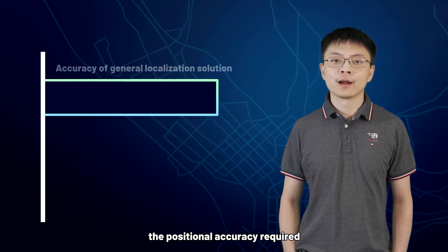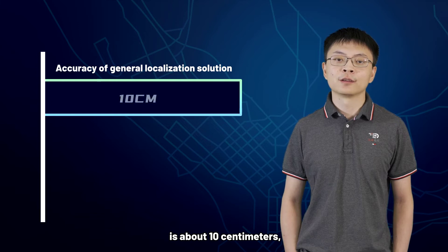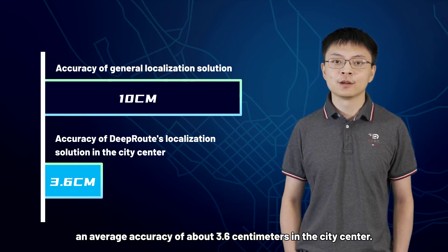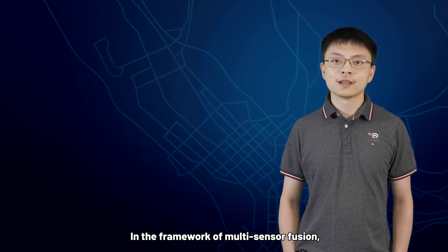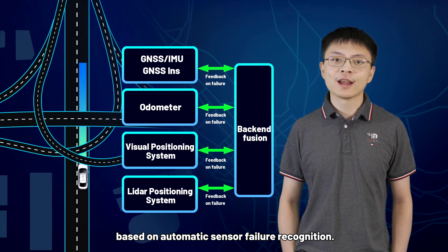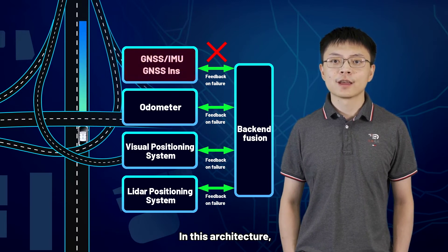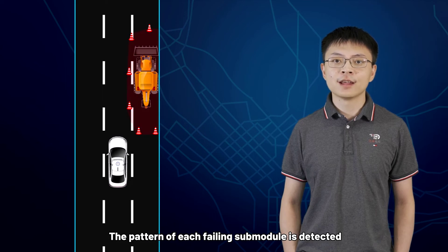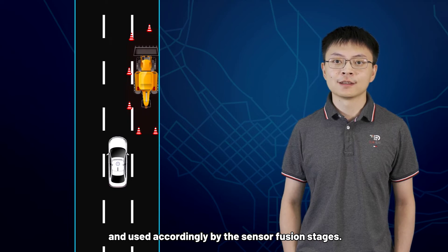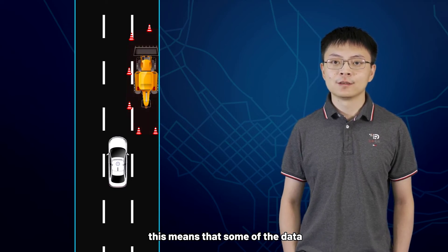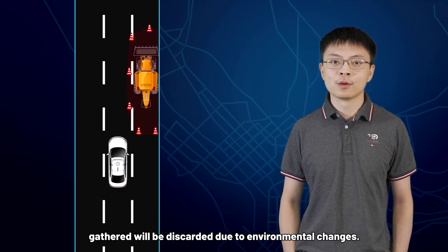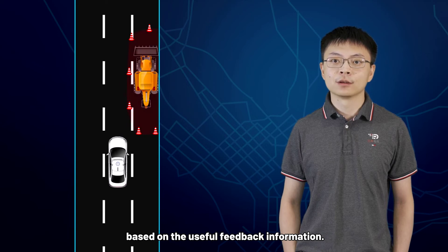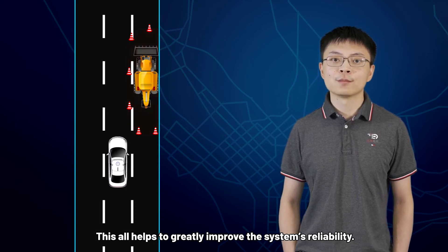Currently, the positional accuracy required in mainstream Level 4 autonomous driving systems is about 10 cm. However, DeepRoot's localization solution can achieve an average accuracy of about 3.6 cm in the city center. In the framework of multi-sensor fusion, we have developed an architecture based on automatic sensor failure recognition. In this architecture, each localization submodule is carefully compared with the multi-sensor fusion results. The pattern of each failing submodule is detected and used accordingly by the sensor fusion stage. For LiDAR and cameras, this means some data gathered will be discarded due to environmental changes. For the GNSS system, this means it will be re-initialized to the correct position based on user feedback information. This all helps to greatly improve the system's reliability.